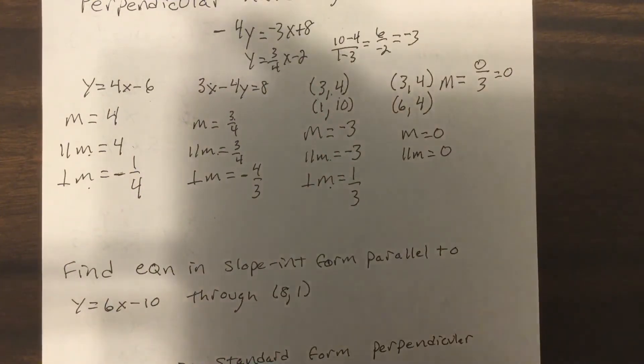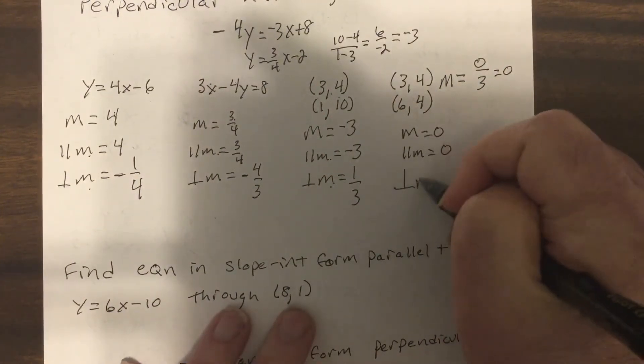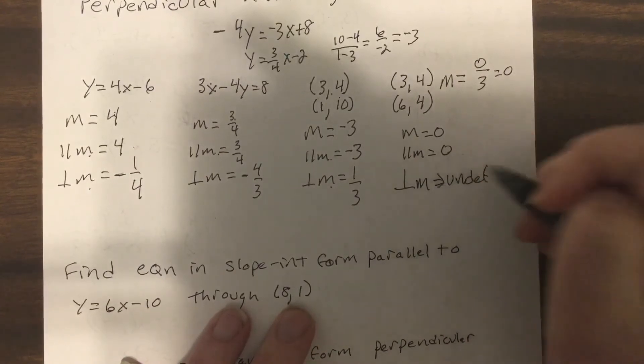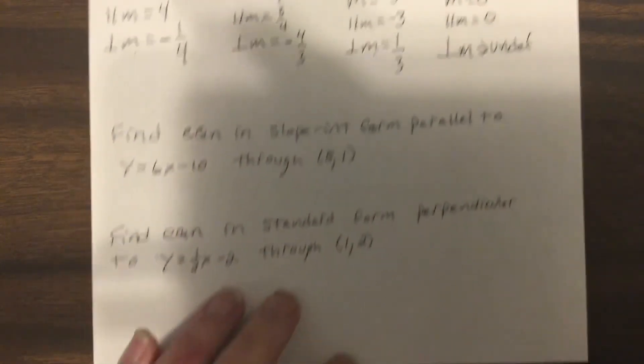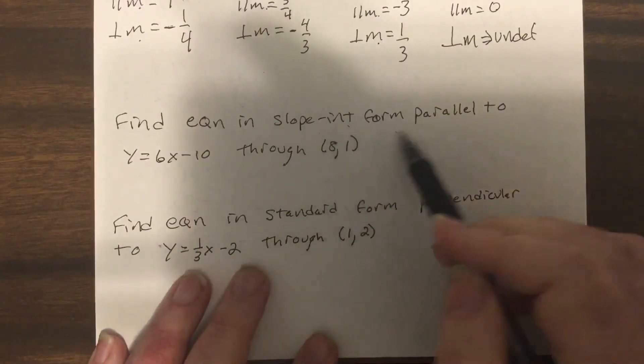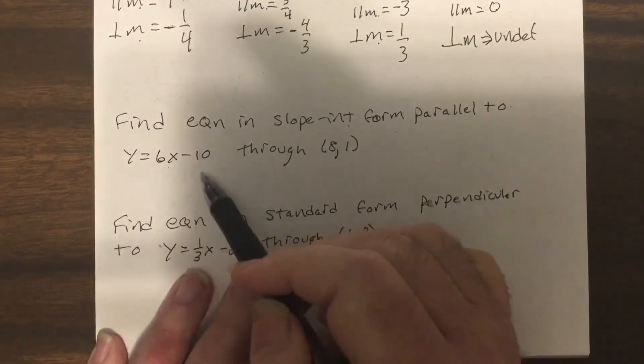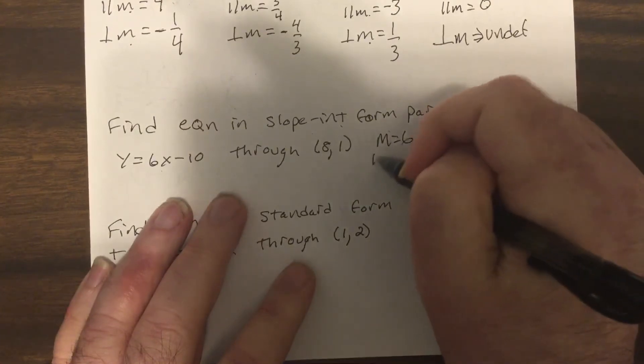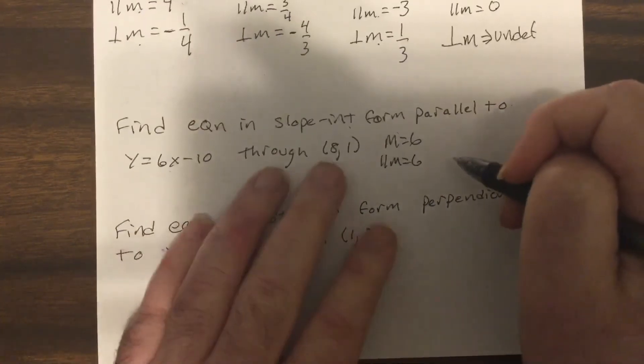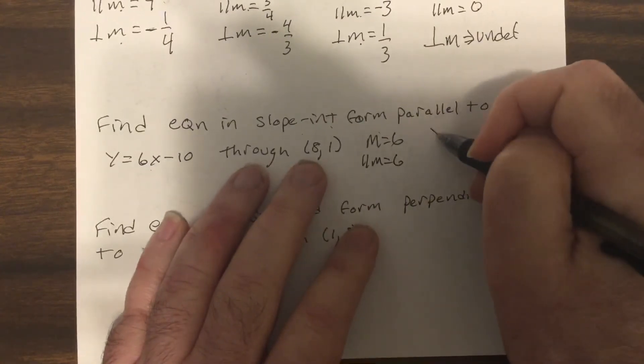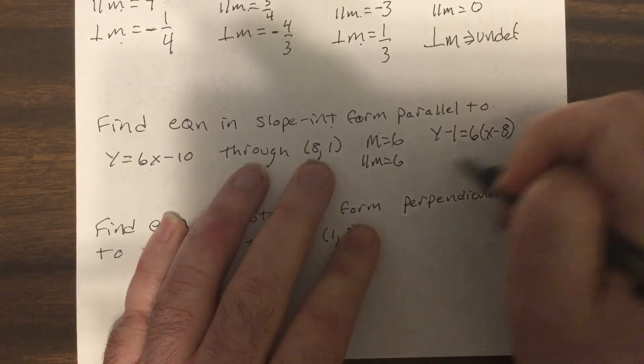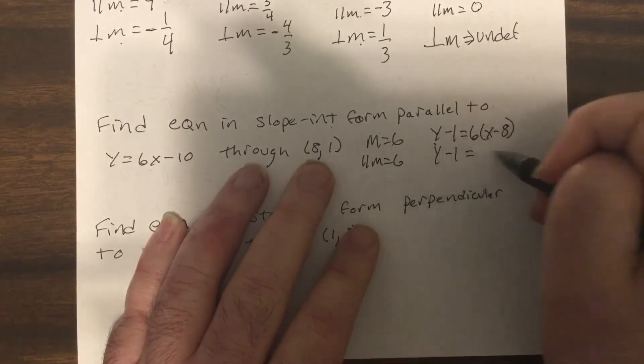Perpendicular would be the negative reciprocal. Also you rotate it 90 degrees so it'd have to be vertical. The reciprocal of zero is undefined, it's a vertical line. Finding equation in slope-intercept form parallel to y equals 6x minus 10. Slope is 6, parallel slope is 6, so I'd use this point: y minus 1 equals 6(x minus 8), so y minus 1 equals 6x minus 48.